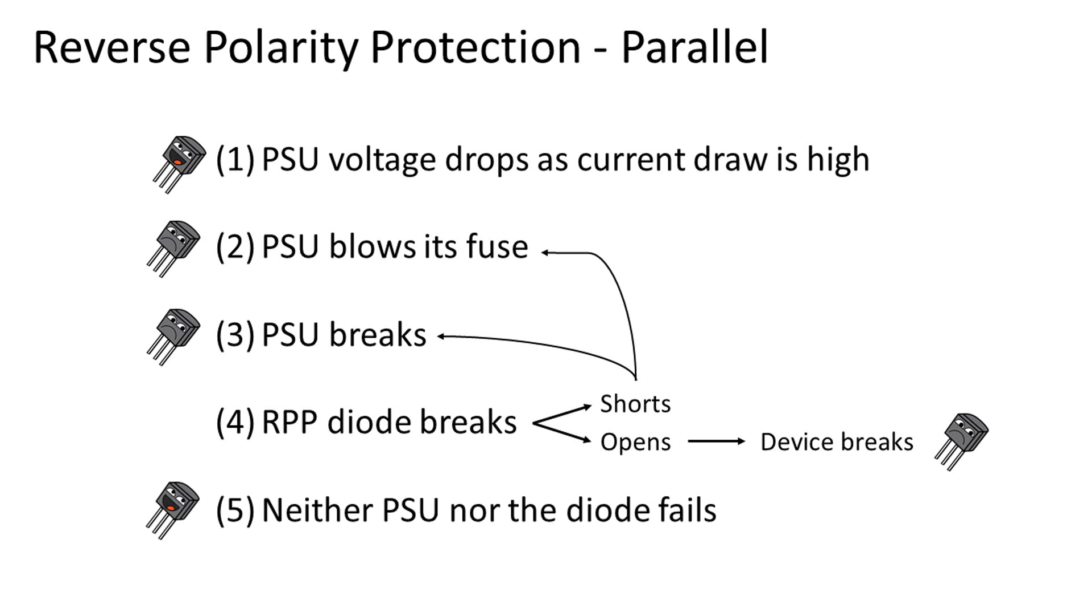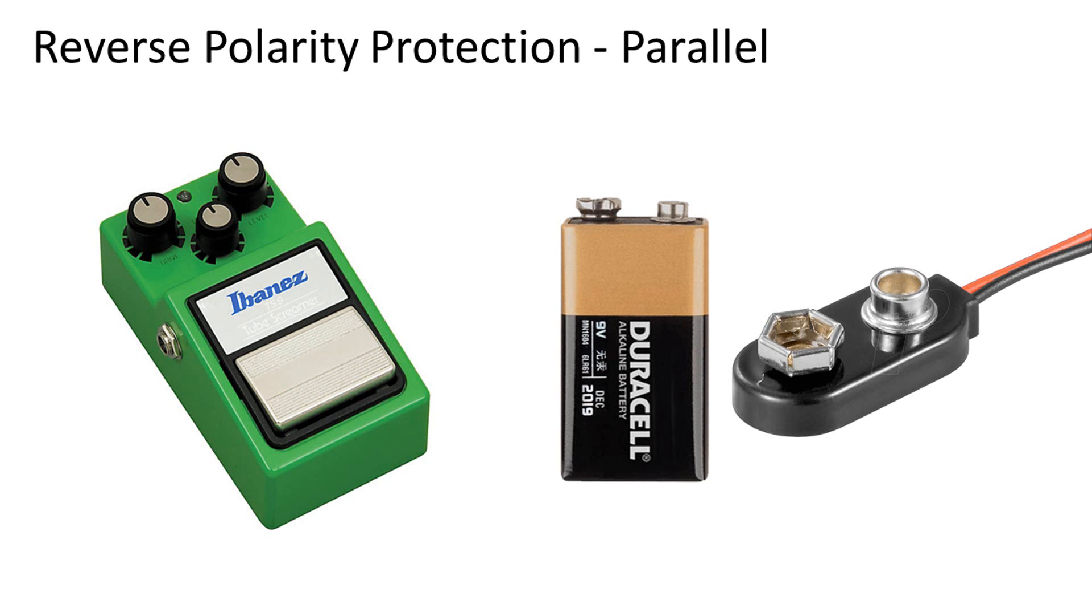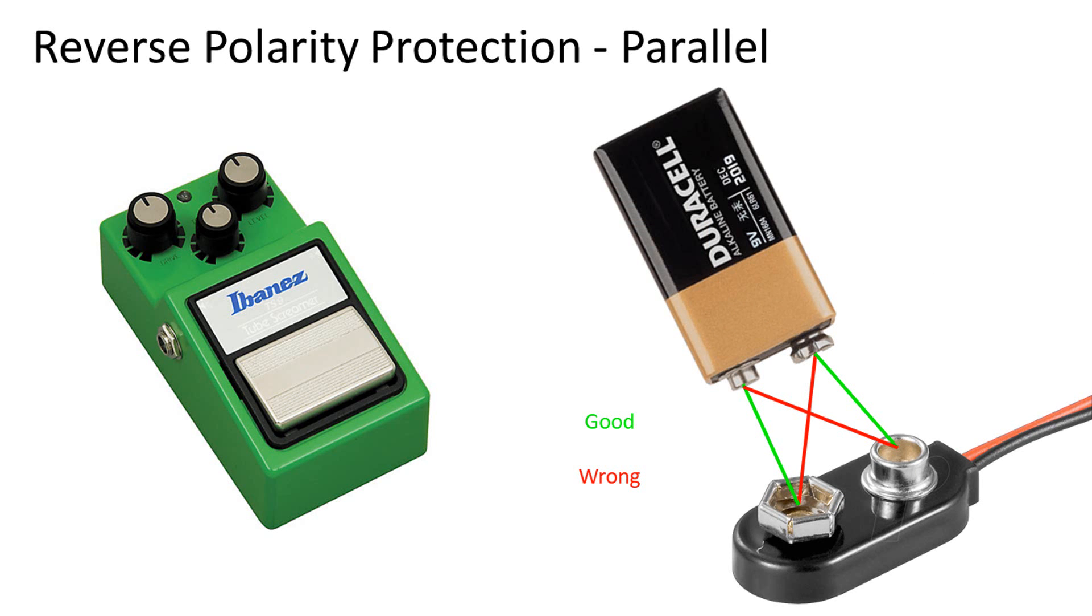5. The diode and the power supply handle the stress just fine and nothing happens. This type of polarity protection is often used in guitar pedals that use a battery clip. Both of the terminals are exposed and there's a 50% chance you put the battery wrong on the clip. These are often very short moments of reverse polarity because the clip doesn't allow you to actually connect the battery as its design is asymmetrical.